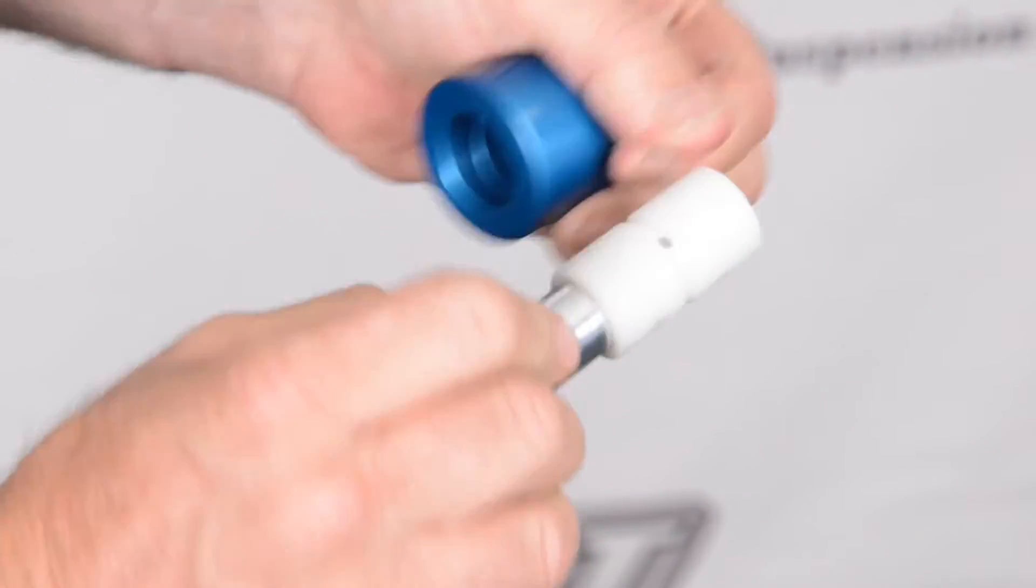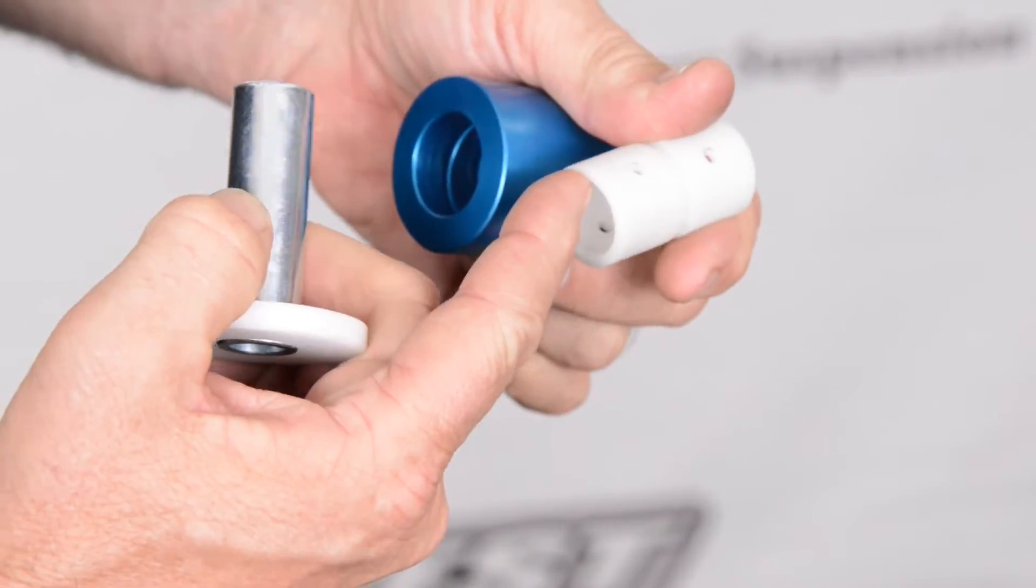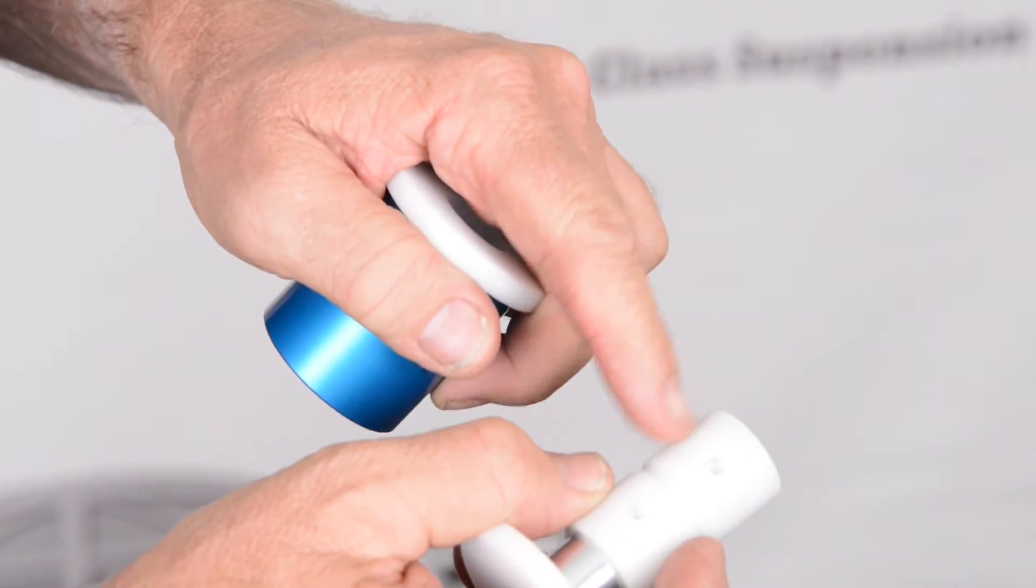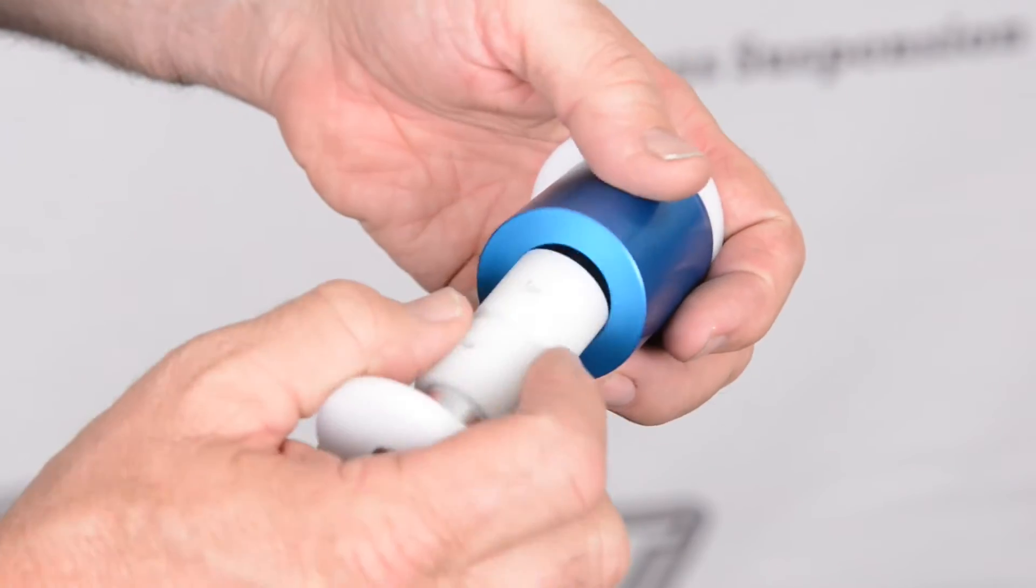So we have a rotating surface between the plastic here and the steel pin. We have another rotating surface between the outer surface here, the insert, and the inner of the housing.